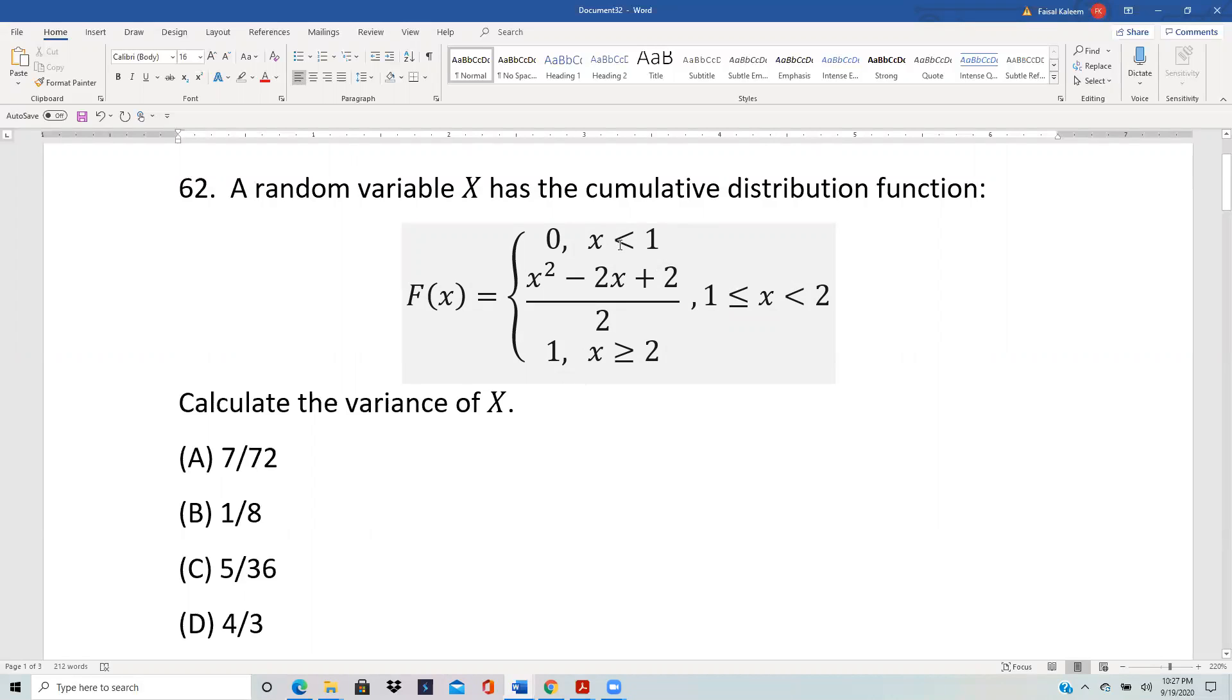However, this is a tricky one because look: F(1) is calculated from this part and that comes out to be (1 - 2 + 2)/2, so that's one half. However, just before 1, if we look at the upper part it's zero, so there's a sudden jump from zero to a half. So it's not continuous at 1 and therefore not differentiable.